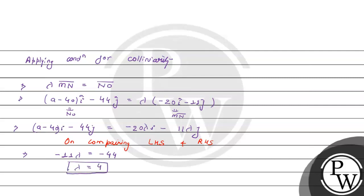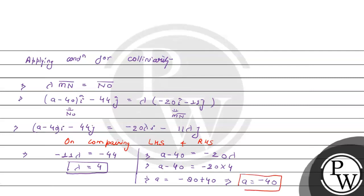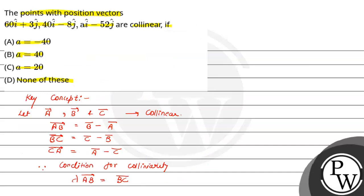Now equating the i components: a - 40 = -20 × lambda = -20 × 4 = -80. So a = -80 + 40 = -40. Therefore a is equal to -40. This is the right answer for the question. Matching with the options, the correct option is option A, which is a = -40. Hope you understood it well. Best of luck, see you later.